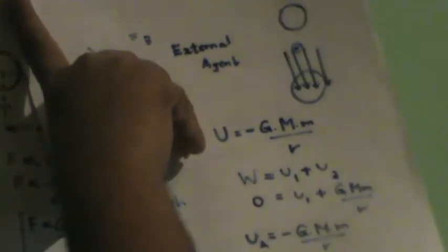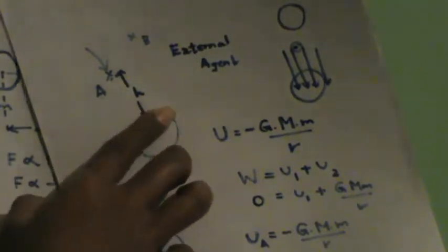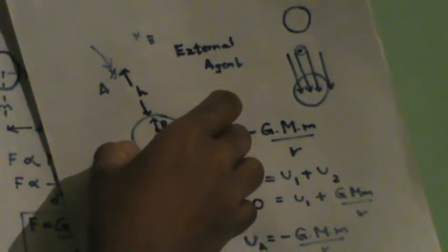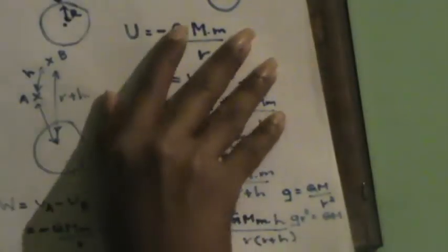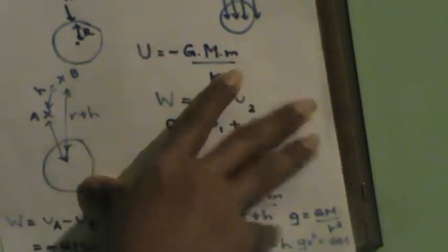We brought the body from infinity to this point, and the work done by the external agent is the gravitational potential energy of this body. We found the general equation: U equals minus G times capital M times small m divided by R. Given two masses and constant G as a universal constant, gravitational potential energy is only dependent upon the distance between the earth and the point.